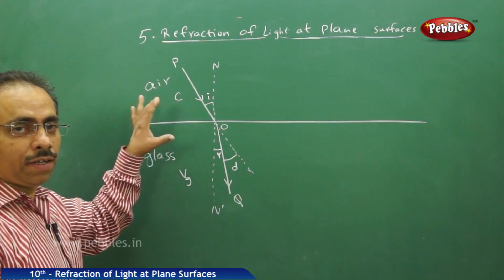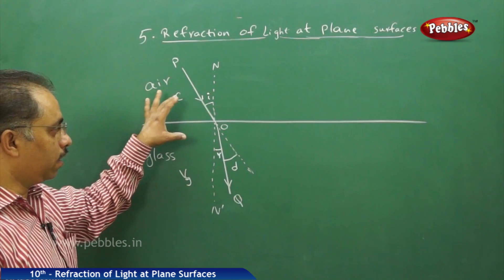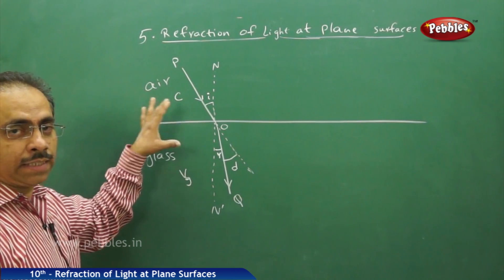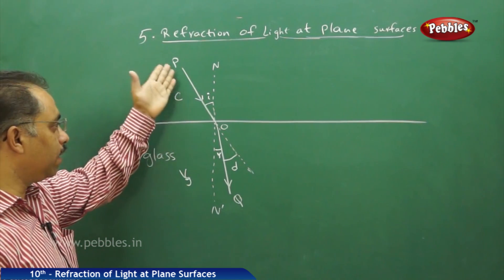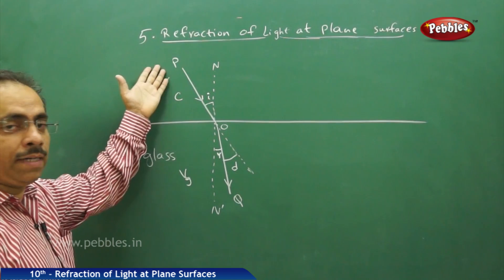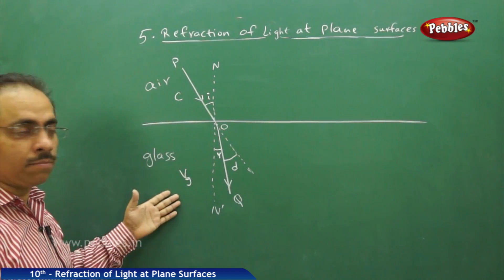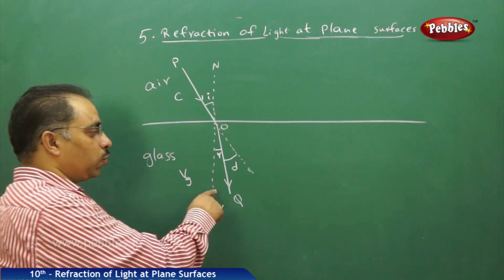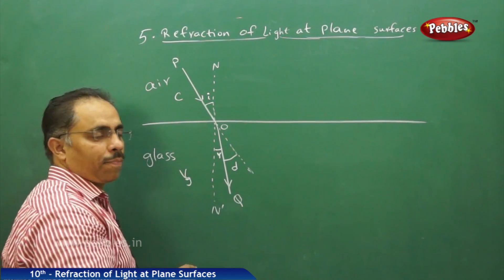The first law of refraction states that whenever a light ray is traveling from a rarer medium to a denser medium, it bends towards the normal.